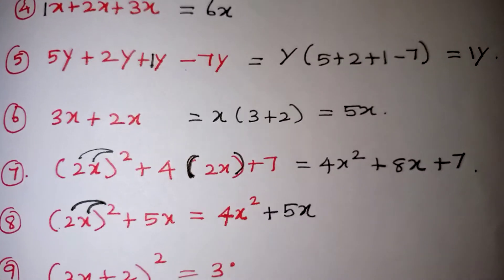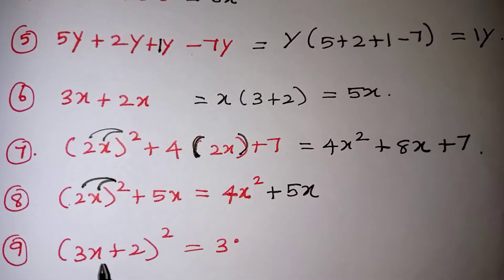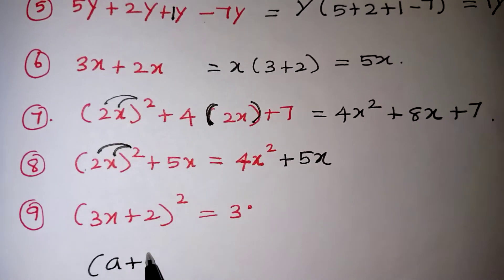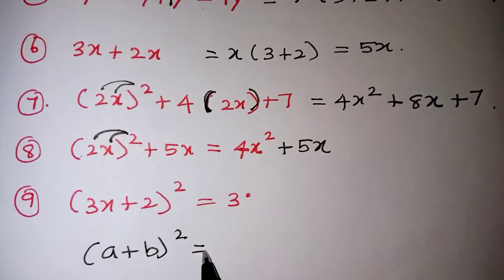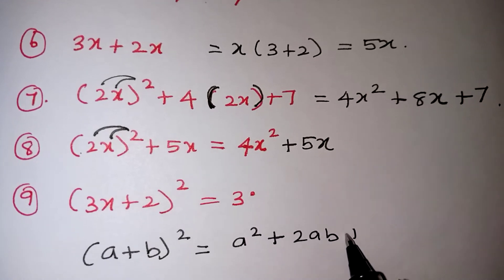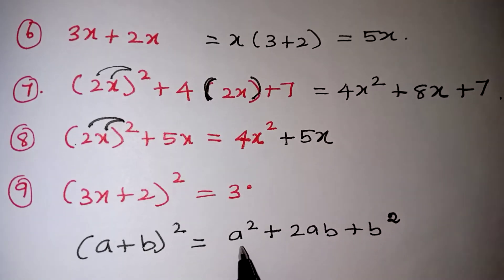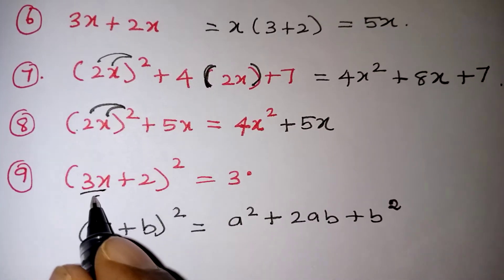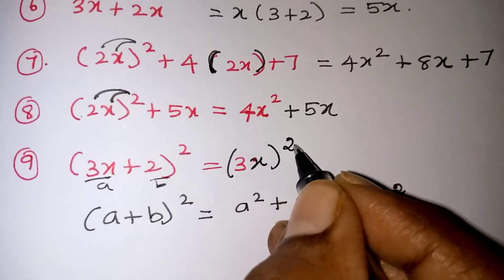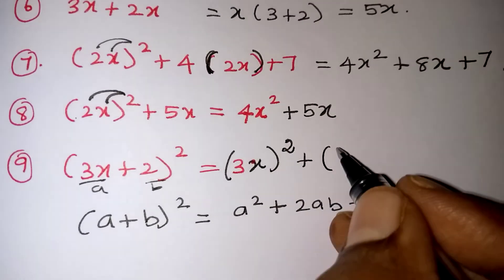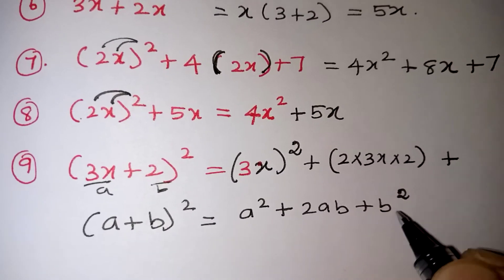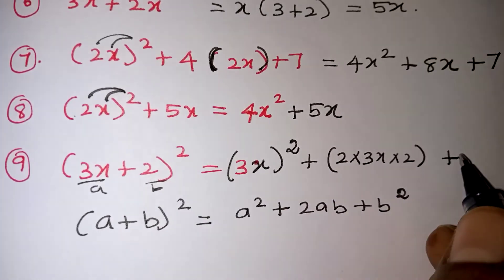Coming to the last problem. 3x plus 2 the whole squared. Children, whenever you are getting a whole squared, you have to look at the problem in the type a plus b the whole squared. a plus b the whole squared formula, we all know that. a squared plus 2ab plus b squared. We can write it in this way. Now first a squared means here this is my a and this is my b. a squared that is 3x the whole squared, a squared plus 2 into a into b. 2 into a value 3x, b value 2, 2ab plus b squared, b value 2. So we have to write 2 squared.